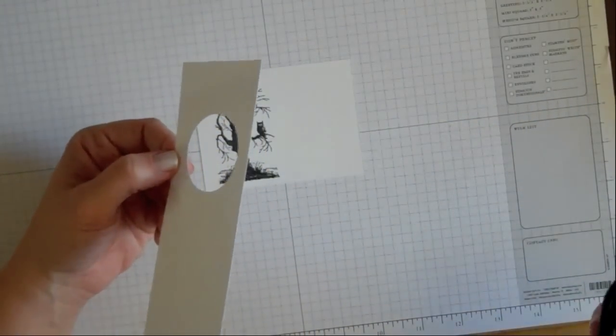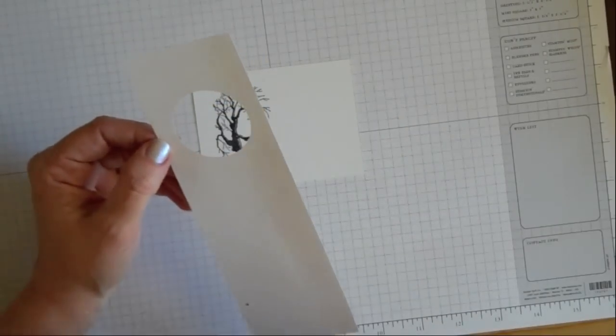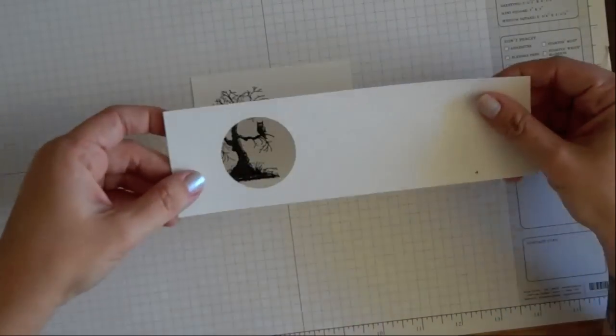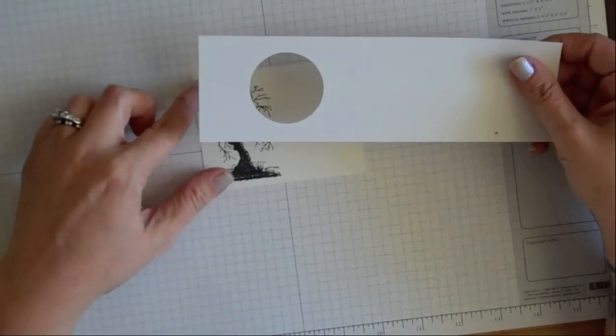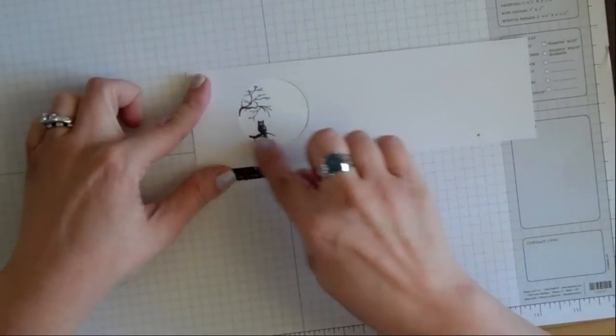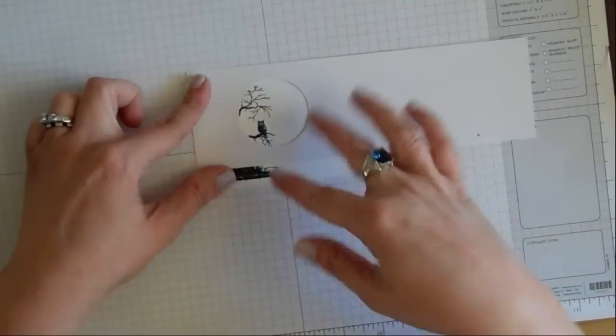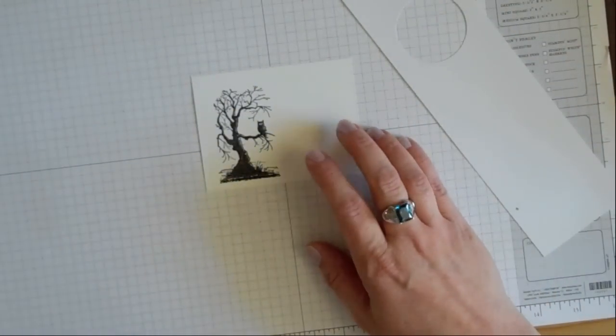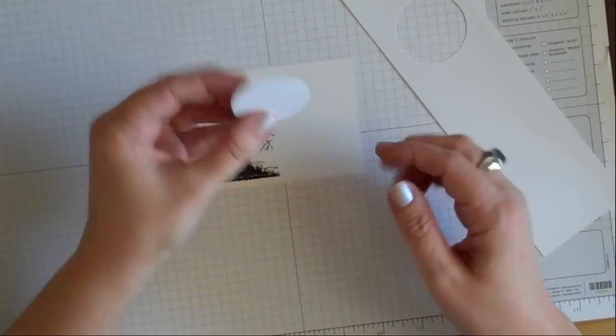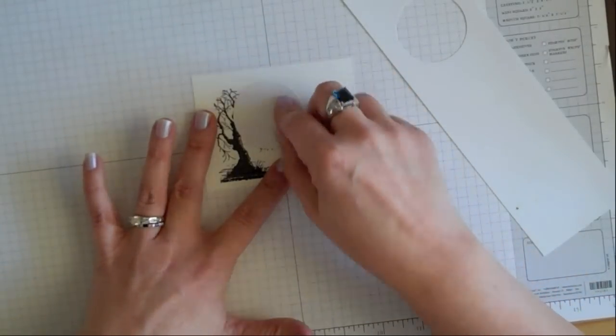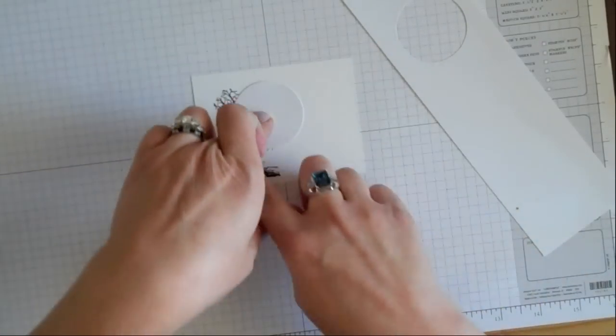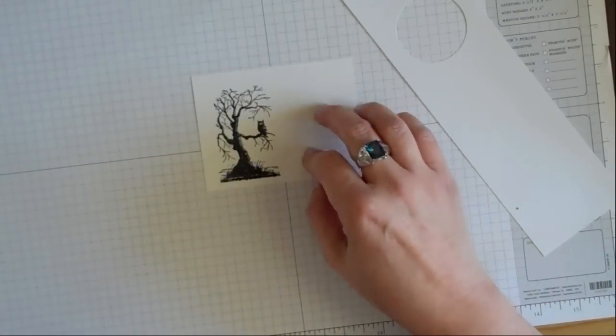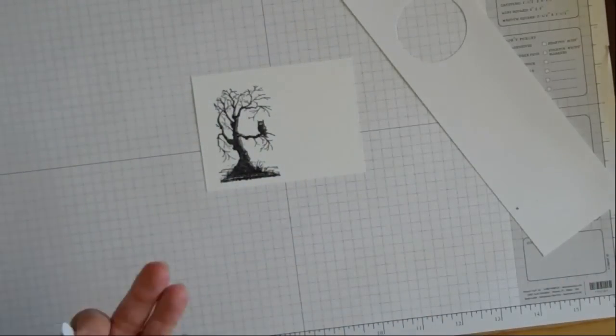We just created a mask and we're going to lay it down and then sponge within the mask or template. The other way you can do masking is you could take that circle you punched out and put that down over something and then sponge around it. When you took that circle off, you would have that image behind it that would be white.